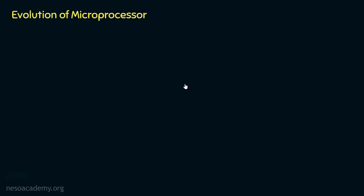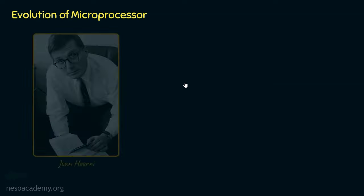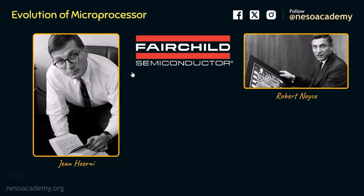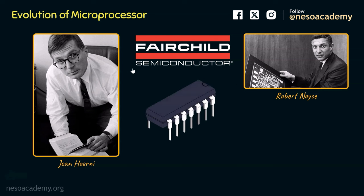The concept of integrated circuit, which is mostly referred to as a chip, was conceived in 1952. In 1959, Gene Herney and Robert Noyes' invention of the planar process with aluminum metallization at Fairchild Semiconductor paved the way for mass production of integrated circuits.